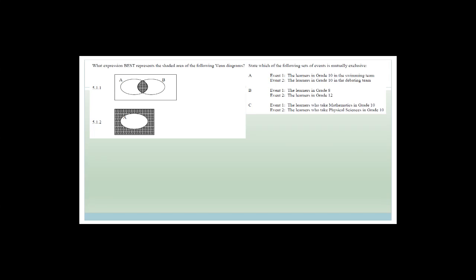Basically, what we're doing now is looking at which expression best represents the shaded area of the following Venn diagrams. Do you agree that the shaded area is only the intersection between A and B? It's not everything in A and B — it's only the intersection. So this is going to be A intersection B. And the shaded area is everything that does not include A, so we'd say it is A complement.